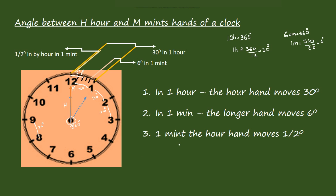In one minute, the hour hand moves 1/2 degree. We know the hour hand moves 30 degrees in one hour, and one hour is 60 minutes. So for one minute it is 30 divided by 60, which equals 1/2 degree. If the minute hand moves from 12 to the next minute mark, the hour hand moves only 1/2 degree. Remember these basics — if you remember this, it is very easy to solve the problems.